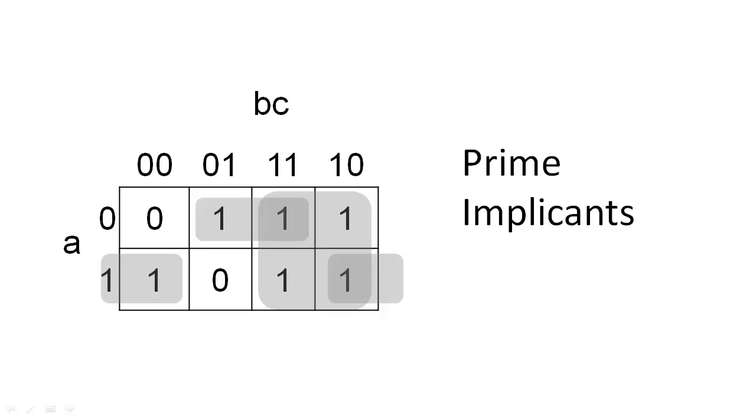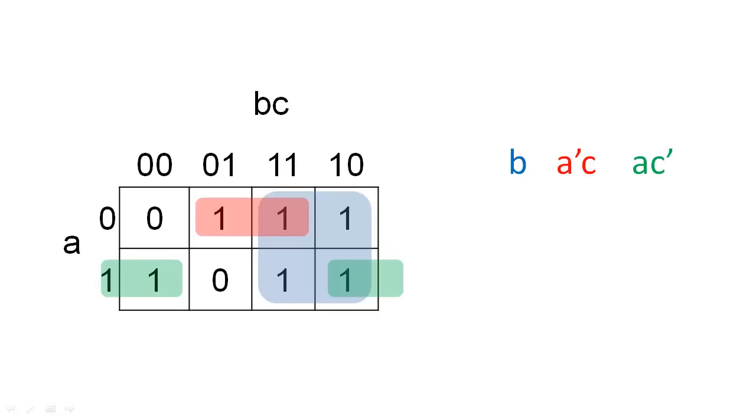We create minimal Boolean expressions by translating the prime implicants into Boolean expressions. For example, all cells in this prime implicant are 1 when B is 1. All cells in this prime implicant are 1 when A is 0 and C is 1. All cells in this prime implicant are 1 when A is 1 and C is 0. Notice that this prime implicant wraps around from one side of the map to the other. To complete the expression, we simply OR these product terms of the prime implicants together.